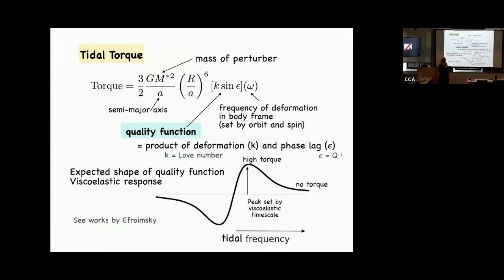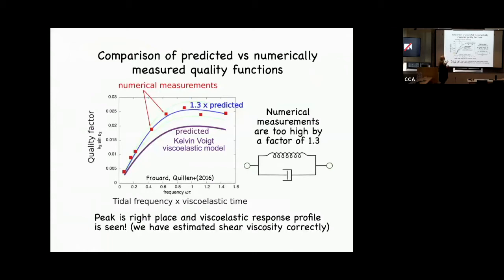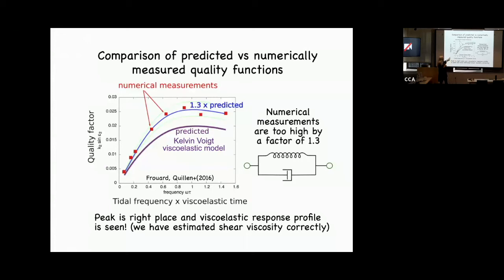I just measured the torque on my model — those are the red dots — and it has the right shape. The prediction of the Kelvin-Voigt viscoelastic model was the purple line, and my red dots were about 30% too high. We published a paper with this discrepancy; nobody had ever simulated tidal spin-up or spin-down with a viscoelastic body before, so we thought 30% was pretty good.